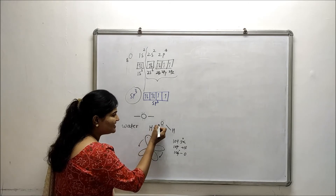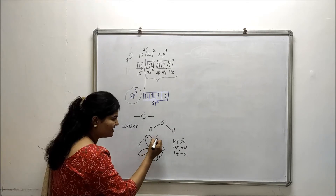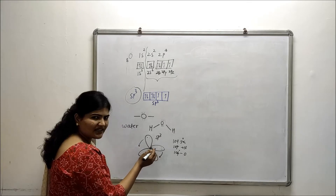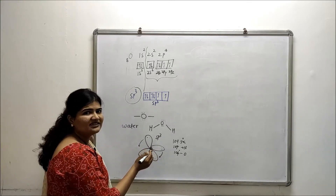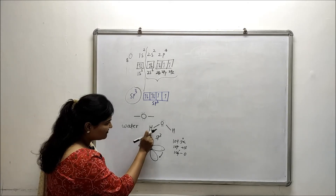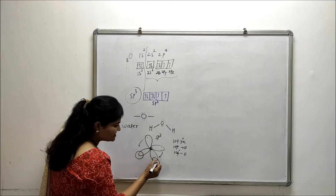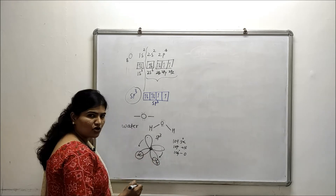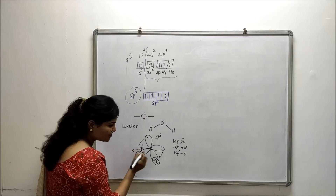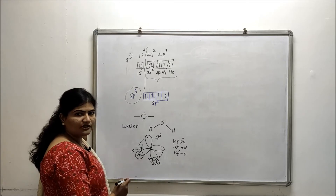Now imagine the orbital diagram for water. Oxygen is in its sp3 hybridized state where two hybrid orbitals are completely filled as lone pairs and will not be involved in bond formation. The remaining two half-filled orbitals each form a sigma bond with a hydrogen atom. The bond character is sp3 of oxygen overlapping with s of hydrogen — this is how the water molecule looks.